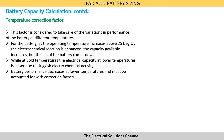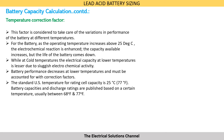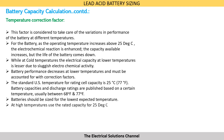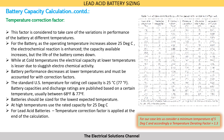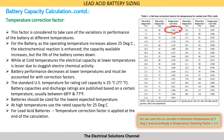The standard US temperature for rating cell capacity is 25°C or 77°F. Battery capacities and discharge ratings are published by battery vendors based on a certain temperature, usually between 68°F to 77°F. Batteries should be sized for the lowest expected temperature; at higher temperatures, use the rated capacity for 25°C. For lead acid batteries, the temperature correction factor is applied at the end of the calculations. For our case, let us consider a minimum temperature of 5°C, and accordingly a temperature correction factor of 1.3 is selected.